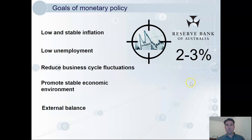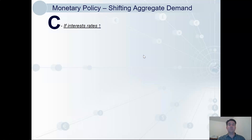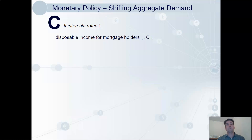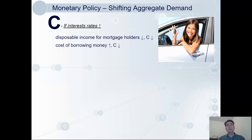For how monetary policy works, remember from the definition that it shifts aggregate demand. Which component is it going to affect? It will affect consumption. So if interest rates rise, then everyone who has a mortgage — a home loan — will have to pay more each month. This is income that they can no longer spend, so consumption will fall. It's also going to cost more to take out a new loan, so people who want to borrow for, say, a car, might settle for buying a less expensive car. The value of new loans taken out will therefore fall, and again there'll be that reduction in consumption.